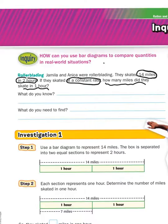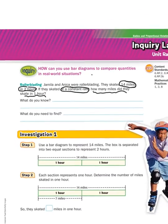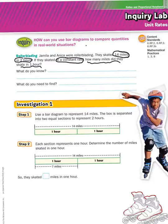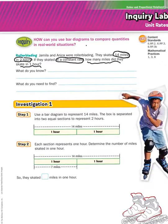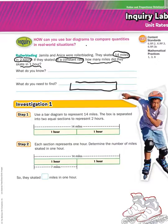We're going to go down to the investigation and go through how to draw a bar diagram to help you with this. I know a lot of you might be thinking you know the answer, and that's okay, but they get more complicated, and the bar diagram can be a helpful strategy. Step one says, use a bar diagram to represent 14 miles. The box is separated into two equal sections to represent two hours. If you were drawing this from scratch, you would start by drawing a bar. That bar represents all 14 miles, and they did that in two hours. So, this is one hour, and this is one hour.